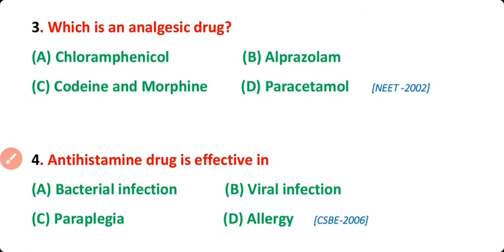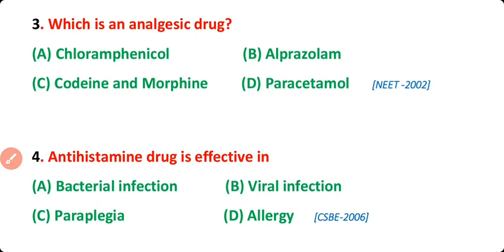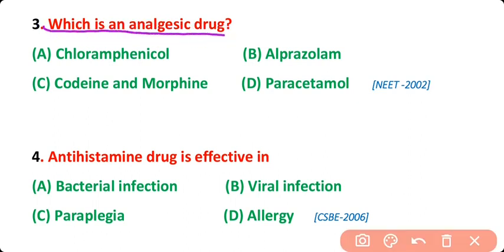Question number 3: Which is an analgesic drug? Options: Chloramphenicol, Alprazolam, Codeine and Morphine, Paracetamol. The correct answer is option C.